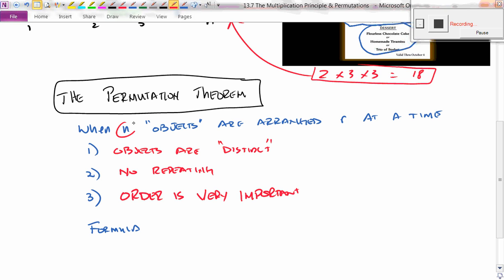So if we have n objects and we're choosing r of them at a time, the objects have to be distinct, no repeating, and the order is very important. Then we have a formula we can use. nPr is just n factorial over n minus r factorial.